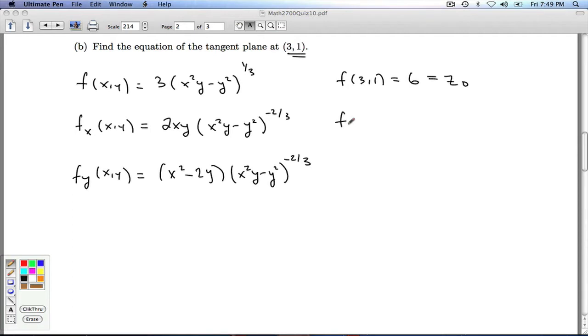Let's look at fx at 3, 1. Plug in x is 3, y is 1. I get a 6 here. I'm going to get an 8 in here, just like I did up there. 8 to the minus 2 thirds is going to be a 4th. So I get 6 times 1 fourth, which is 3 halves. fy at 3, 1. I'm going to get 9 minus 2 is 7. And I'm going to get 8 to the negative 2 thirds again, so that's 1 fourth. So I get 7 fourths.